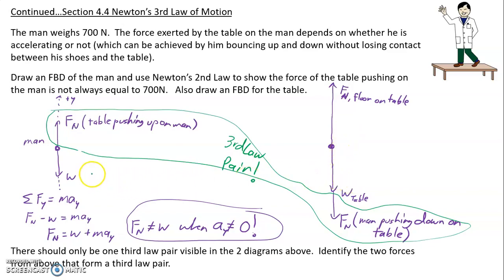Or if we were to draw a free body diagram for the earth, then it would have the third law pair to this, which would be the man pulling up on the earth. Because this force is the earth pulling down on the man. But the only third law pair where we can see both of the forces in the pair is this one right here.